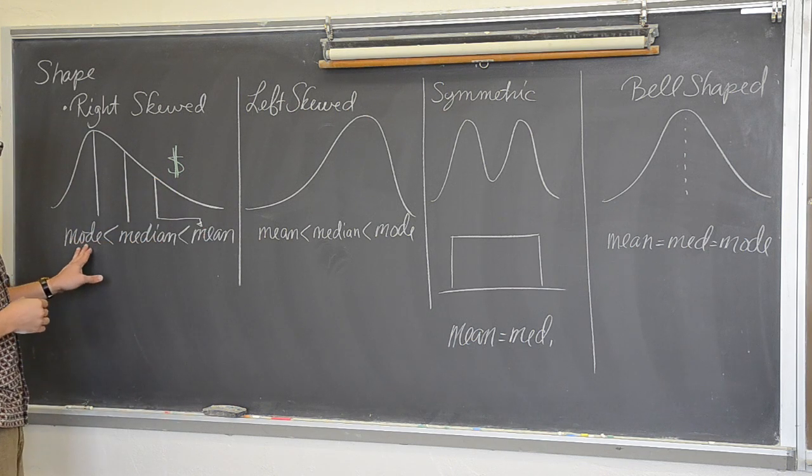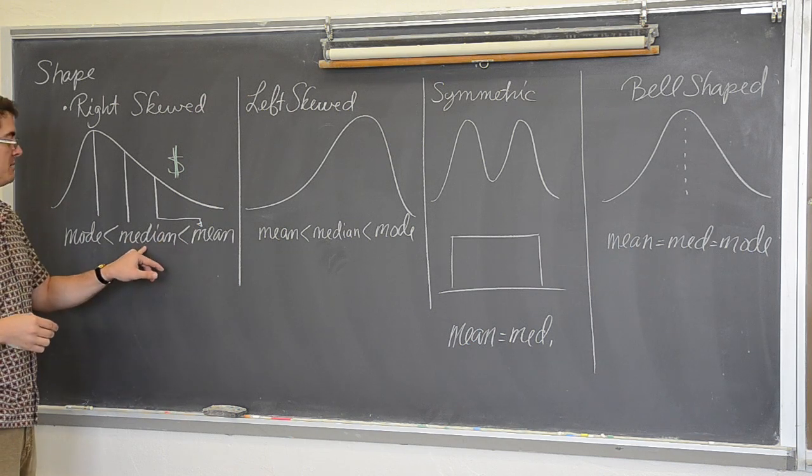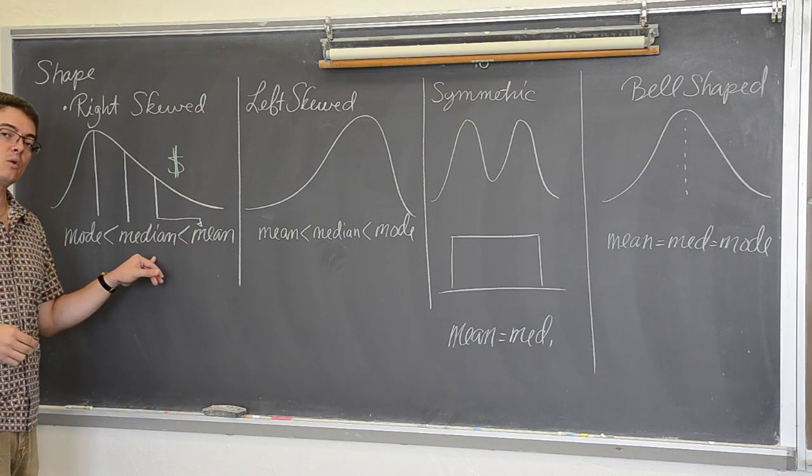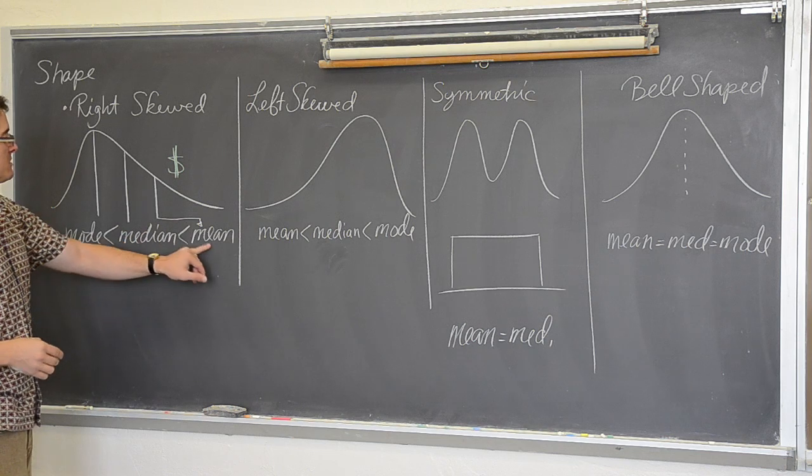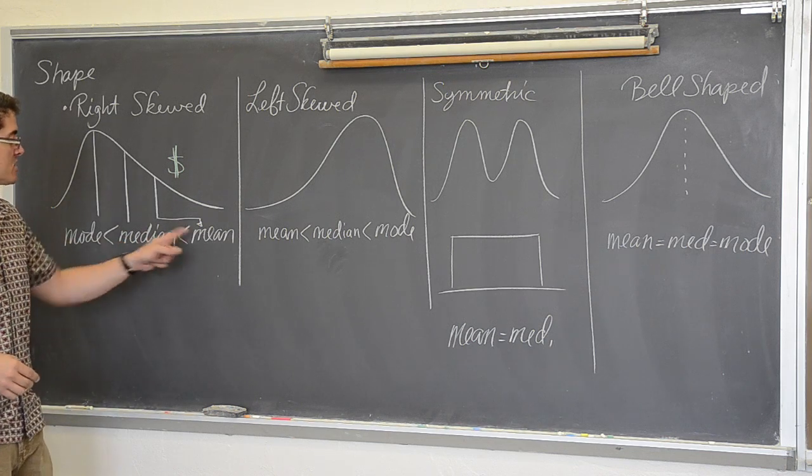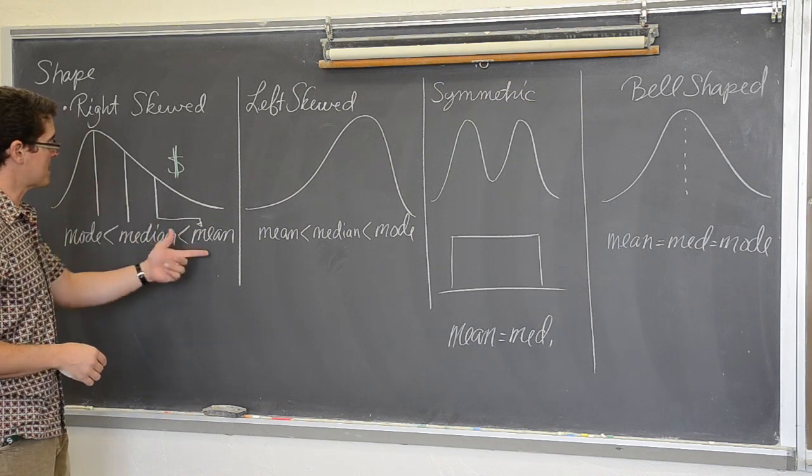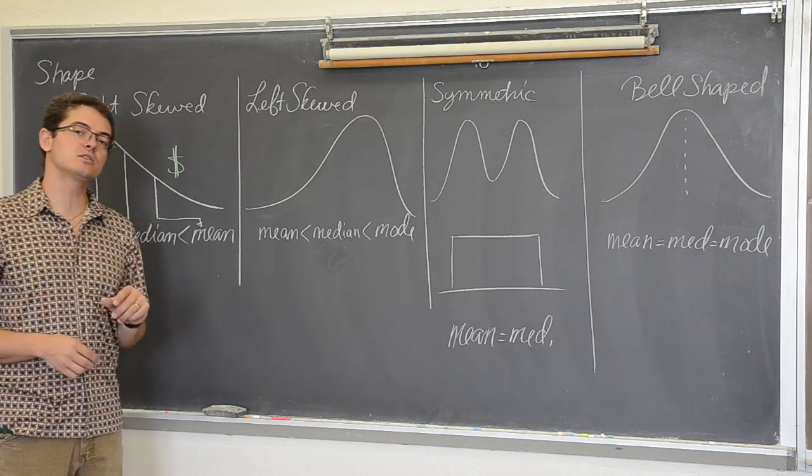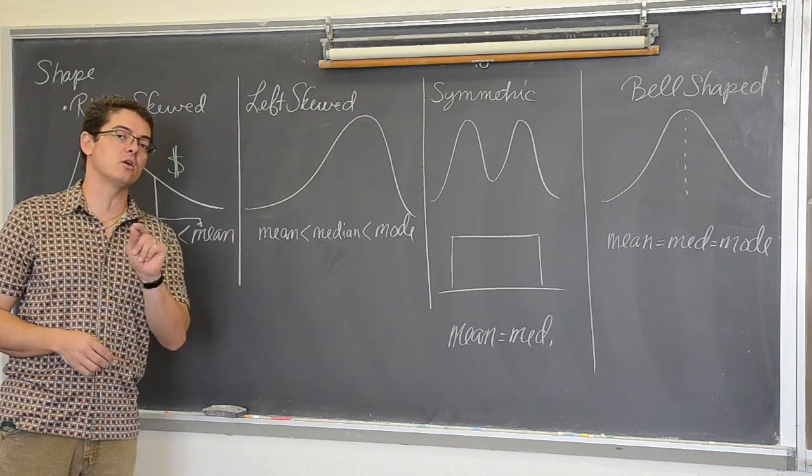So if you notice that your mode, median, and mean—you can find the mean and median out of your calculator when you do one var stats—if you notice the mean is larger than the median, especially because that comes out of one var stats, that is an indication that the data is right skewed or that you have a large outlier.